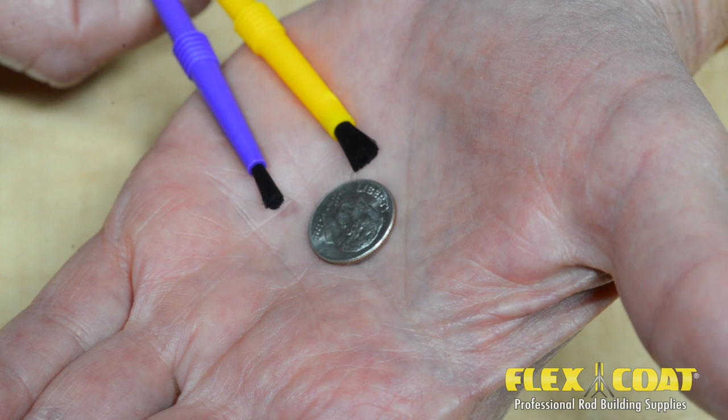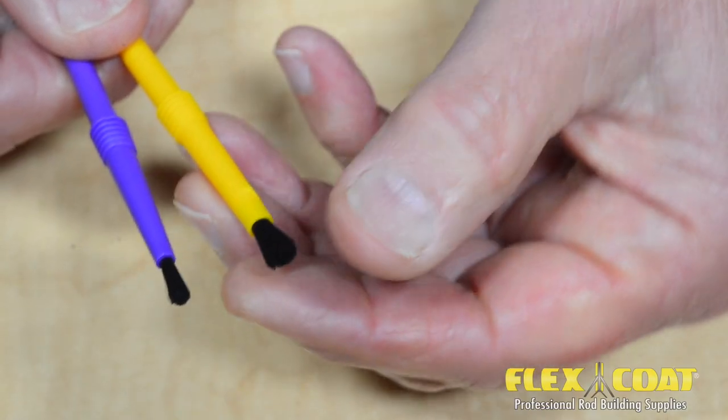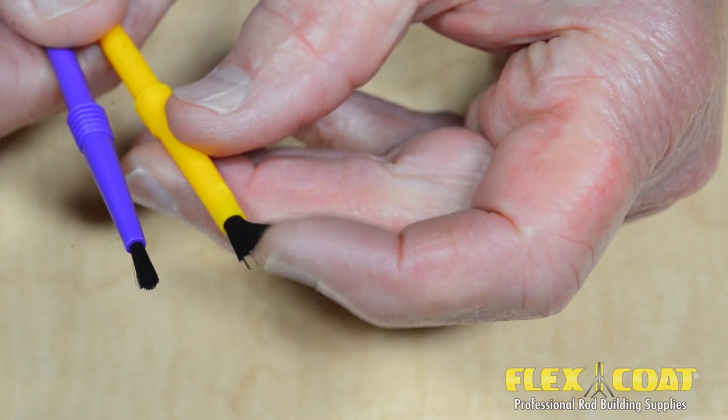Let's start with the bristles. We offer two styles of brush, the purple 1⁄8 bristle cluster and the yellow 1⁄4 bristle cluster.